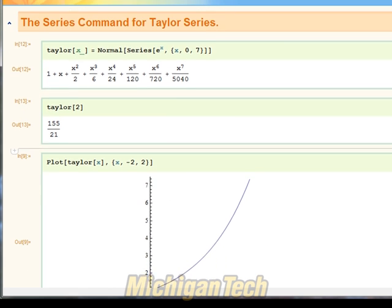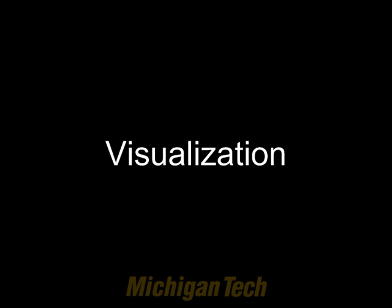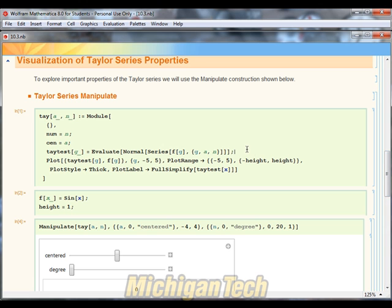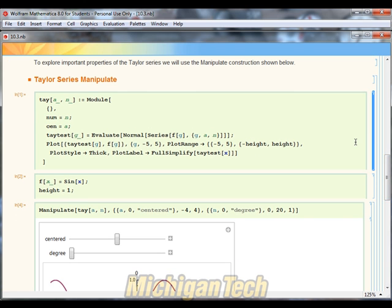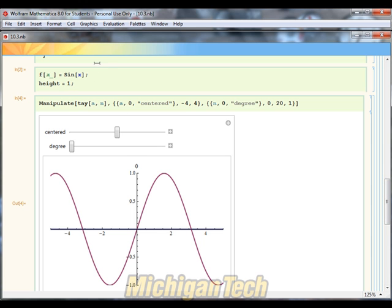Alright, so that's just the basics of using the series command. Now let's look at our manipulate. So here I have some of the meat of the code. And so this is something you don't necessarily have to be able to use, it's just there to make the manipulate run correctly. So you're more than welcome to just select that and close that and hide that code if you'd like. The thing that you can manually adjust is the function that we want to investigate, and the range of y values in the graph, which I've called the height here. So when I evaluate using that function and that height, and I run my manipulate, this is what I get.